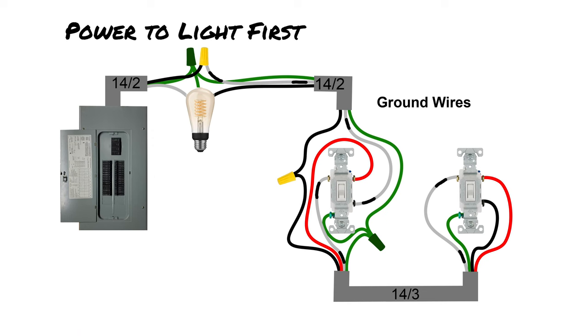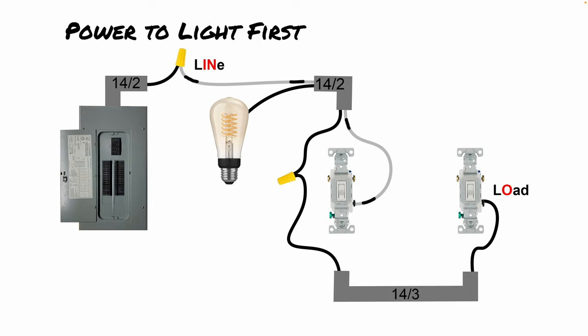Sometimes the power is not coming into a light switch at all — it's actually coming into the light fixtures first. Let's look at this scenario. The line comes from the electrical panel and is spliced in the first box, where it changes from the black wire to a white wire marked with black electrical tape. That white wire marked with black tape comes all the way down to the first light switch and connects to the black screw, also called the common terminal. The load is then connected to the black terminal on the right switch and spliced back to the light fixture.